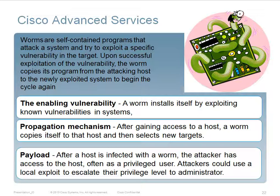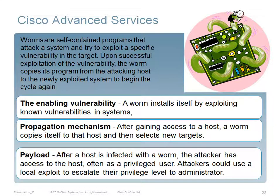Worms are self-contained programs that attack a system and try to exploit a specific vulnerability in the target. Upon successful exploitation, the worm copies its program from the attacking host to the newly exploited system and begins again. Key worm components include: the enabled vulnerability — a worm installs itself by exploiting vulnerabilities in systems; a propagation mechanism — after gaining access to a host, a worm copies itself and selects a new target; and payload — after a host is infected, the attacker has access, often as a privileged user, and can escalate to administrator level.